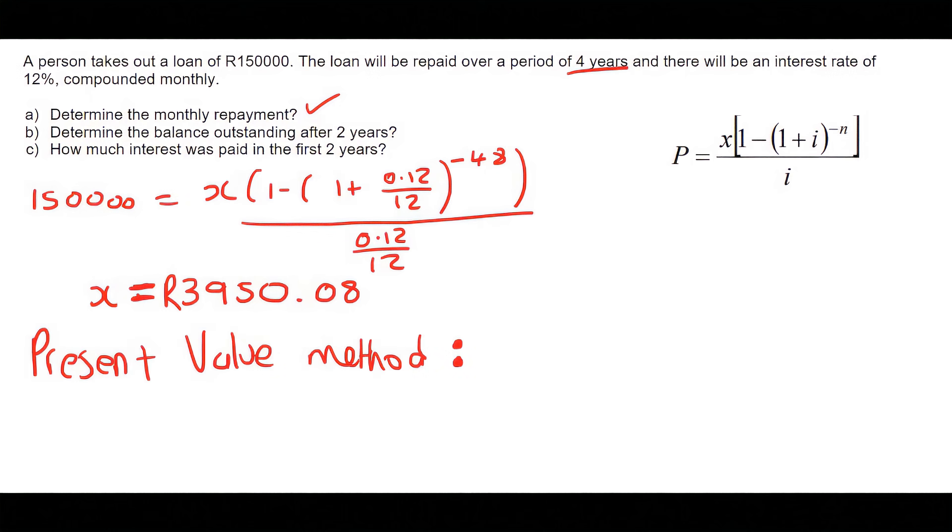To work out the balance outstanding using the present value method, it's really easy. You just use the present value formula, and for the place of N, you look at how many years do you still have to pay.